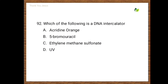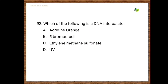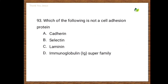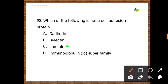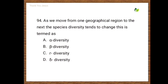Next question: Which of the following is a DNA intercalator? Options are acridine orange, 5-bromouracil, ethylene methane sulfonate, UV. The correct option is the first one — acridine orange. Next question: Which of the following is not a cell adhesion protein? Options are cadherin, selectin, laminin, immunoglobulin superfamily. The correct option is laminin.